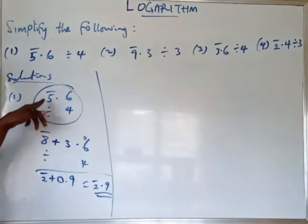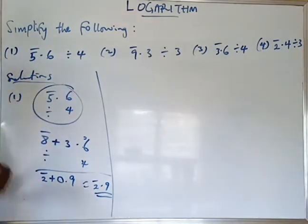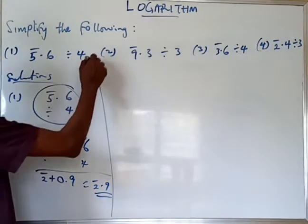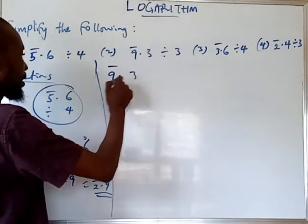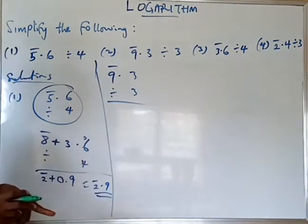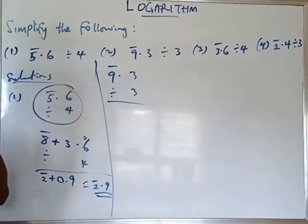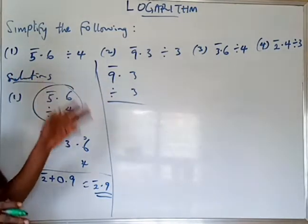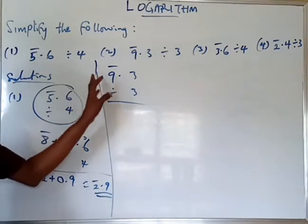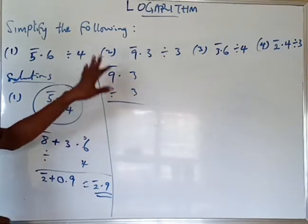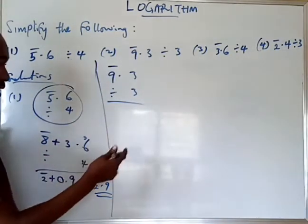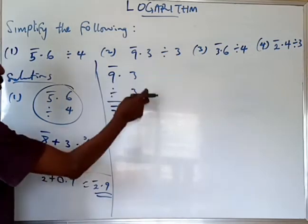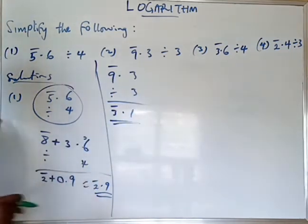In any division where the bar number leaves a remainder other than zero, the question has to be adjusted. Now let's try the next question. We have bar 9.3 divided by 3. We observe that 3 can divide 9 without leaving any remainder, so no adjustment is needed. Therefore, 3 into 9 gives bar 3, and 3 into 3 gives 1, so the answer is bar 3.1.